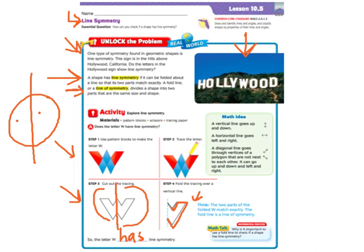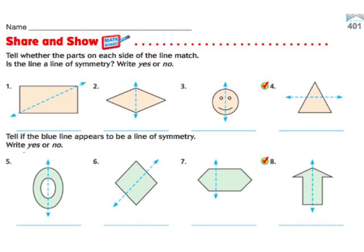We're going to skip page 400, and we're going to do this a little bit more, give you some examples, by filling out page 401. So, turn to page 401 in your big math books, and we're going to do the share and show part up here at the top. We're going to tell whether the parts on each side of the line match. Is the line a line of symmetry, yes, or no?